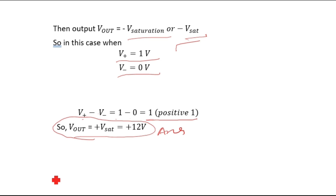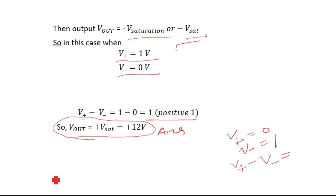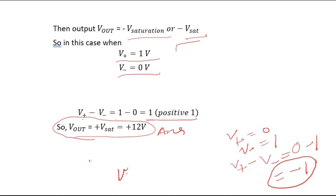Conversely, if V+ minus V− is negative — for example if V+ were 0 and V− were 1 — then V+ minus V− equals 0 minus 1, which gives minus 1. In that case, V_out would become minus 12 volts, which is minus saturation.